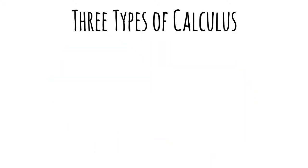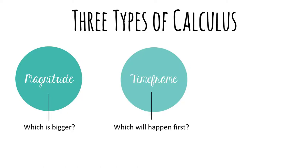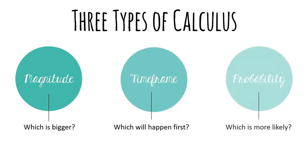Generally, there are three metrics debaters use to do impact calculus: magnitude, timeframe, and probability. Magnitude asks us to consider which impacts are bigger — what is the extent and significance? When you're just starting out in debate, even this simple premise can be enough to work with.